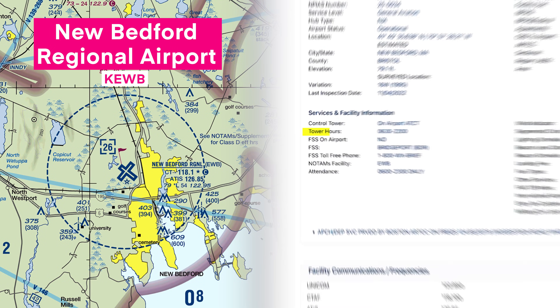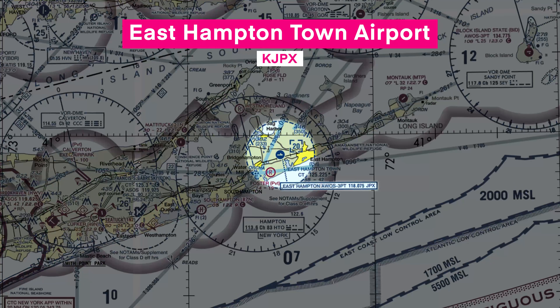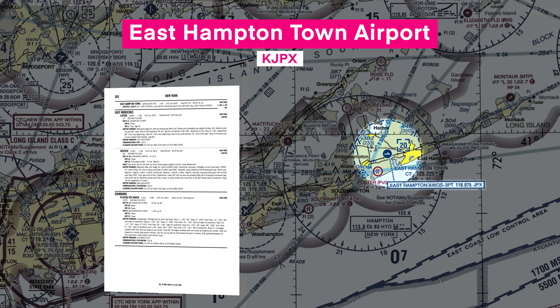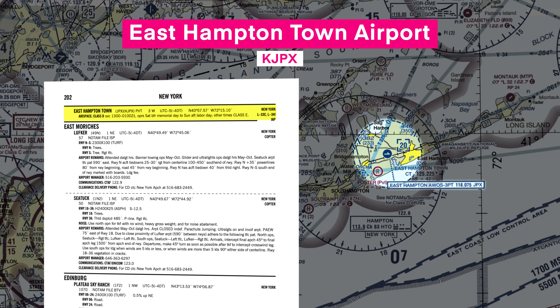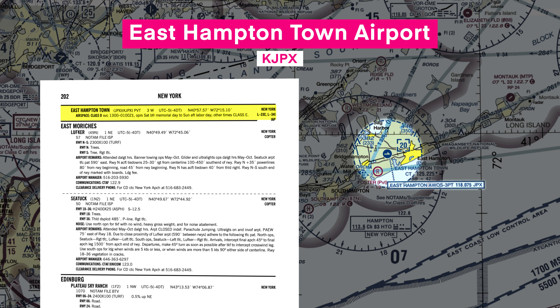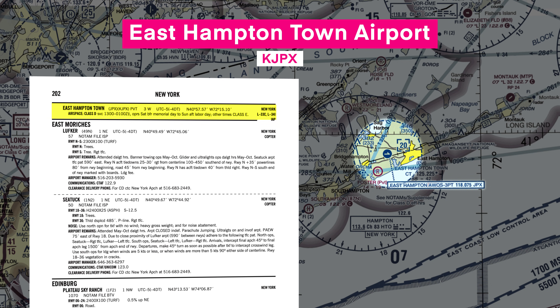For example, New Bedford Regional is open from 6:30 a.m. to 10:00 p.m. And some airports are only busy during certain times of the year. Take East Hampton Town Airport, for example — it only has an operating control tower during the busy summer months to deal with the huge traffic of vacationers. The rest of the year, it's uncontrolled.